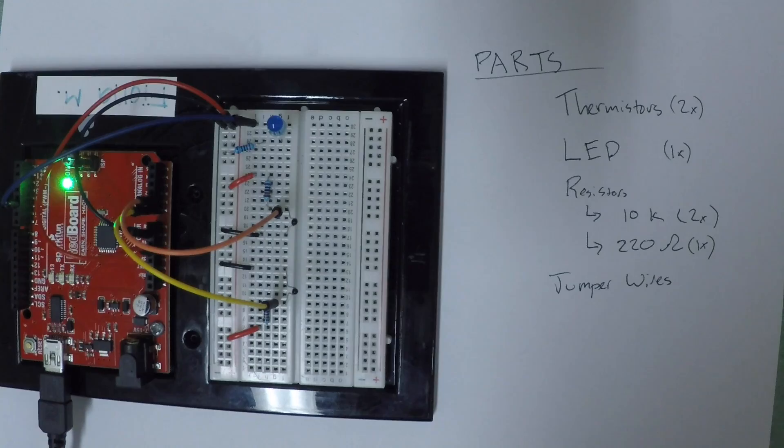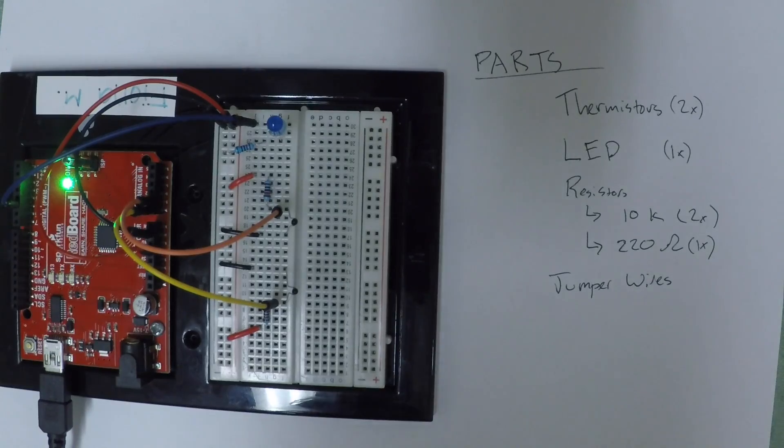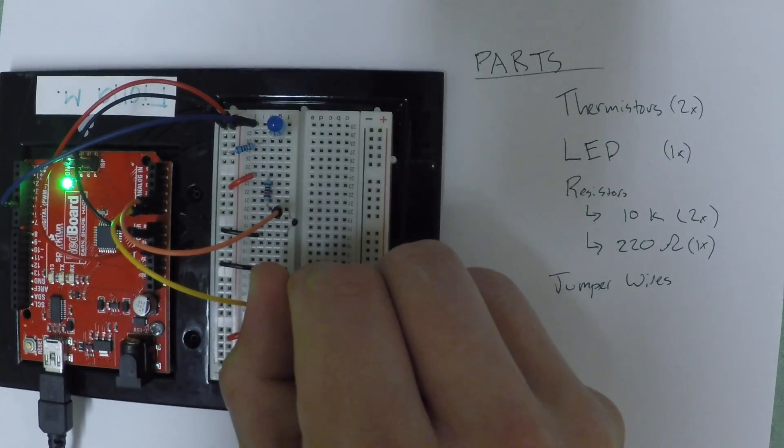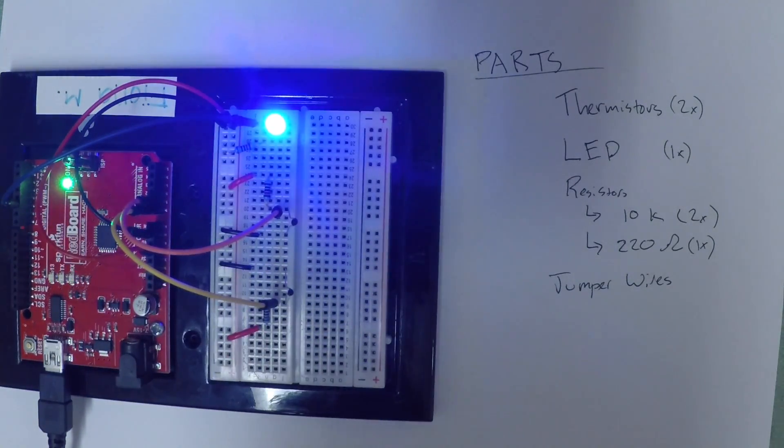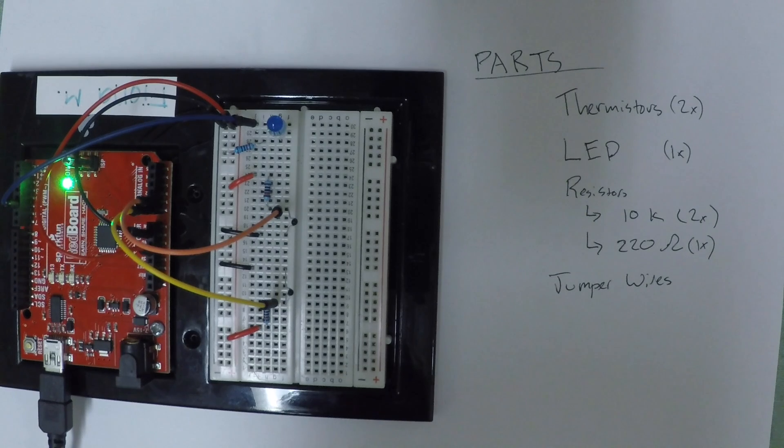Okay, time for the best part. Testing it out. Seeing if we have to rebuild everything. So the code's uploading now. And we'll pinch one thermistor to create a temperature difference. The LED goes on and should come back off as the temperature goes down. And it does. We're done.